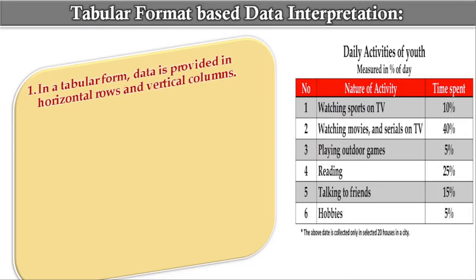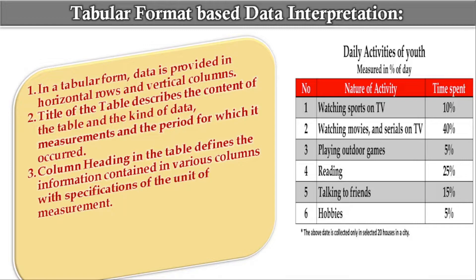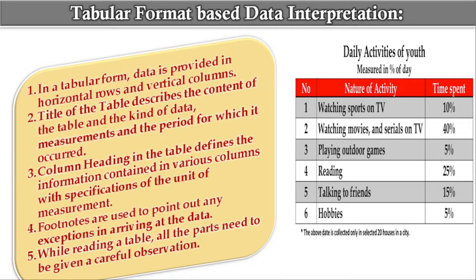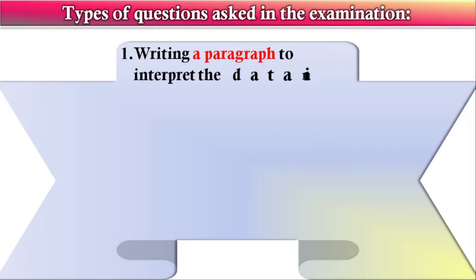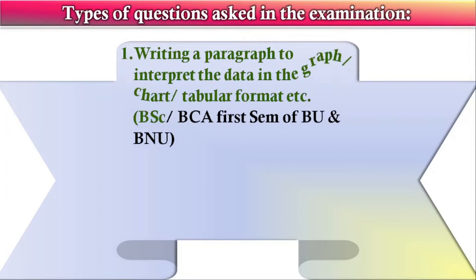The fourth type is tabular format based data interpretation. Data is provided in horizontal rows and vertical columns. The title of the table describes the content, the kind of data, measurements, and the period for which it occurred. Column headings define the information in various columns with specification of the unit of measurement. Footnotes point out any exceptions in arriving at the data. When reading a table, all parts need careful observation.